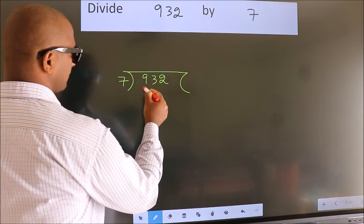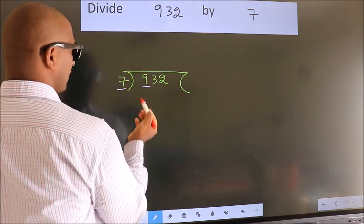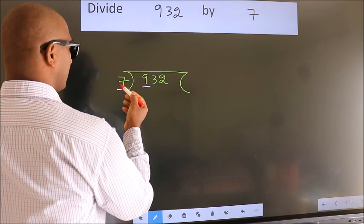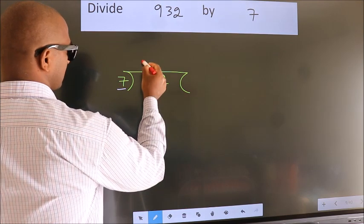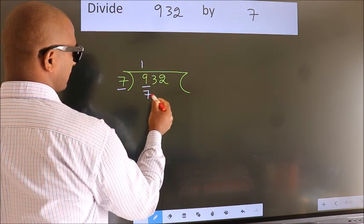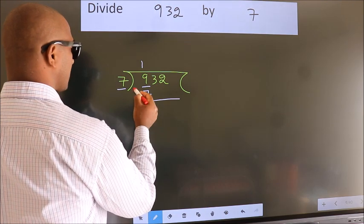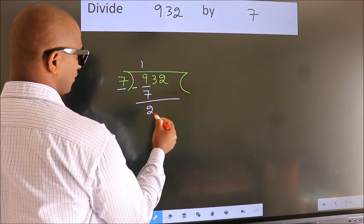Here we have 9. Here 7. A number close to 9 in 7 table is 7 once 7. Now we should subtract. We get 2.